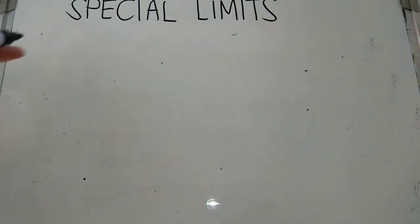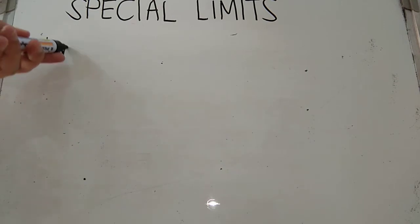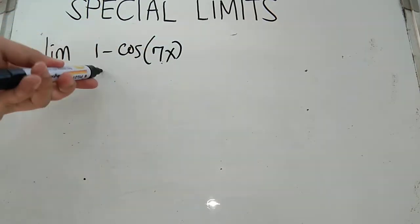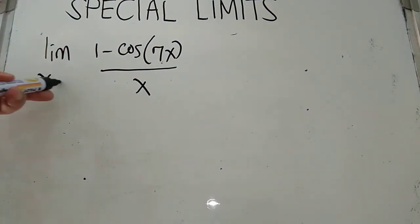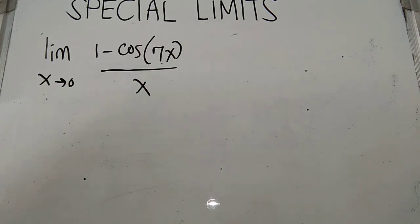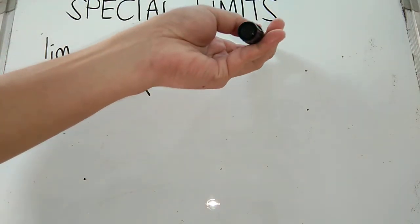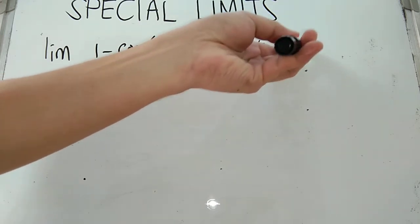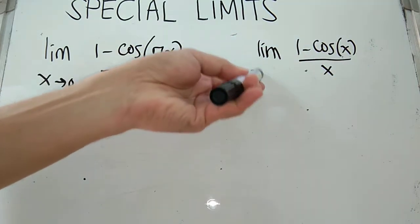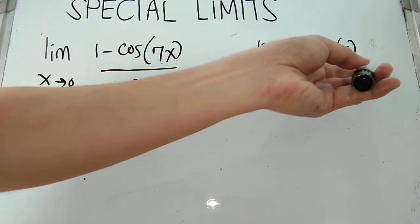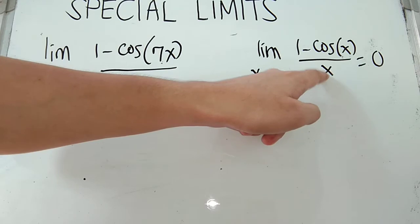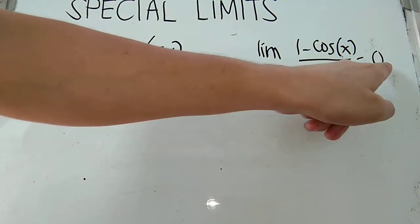Another example. If we have the limit of (1 minus cos 7x) over x as x approaches 0, we are now dealing with the cosine trigonometric function. We have a second special limit theorem: the limit of (1 minus cos x) over x as x approaches 0 is equal to 0. Whatever the function inside cosine must also be the function on the denominator so that the limit value is 0.